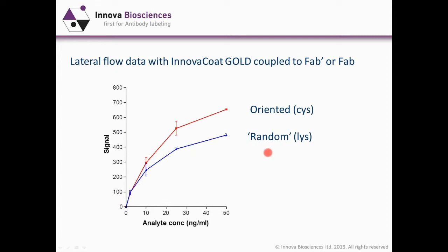Fragments are not necessarily binding in a totally random fashion. On occasions you may get no reactivity at all if you've got a particularly unfavorable orientation when you're coupling through lysines. So with different antibodies you may see a different fold enhancement. But this shows that with identical fragments, apart from the presence or absence of a cysteine, you can get better performance by orienting the antibody. Looking at the scientific literature, the fold improvement can be anything from 10 to 100 fold depending on the circumstances.